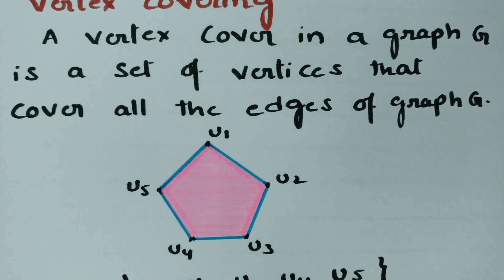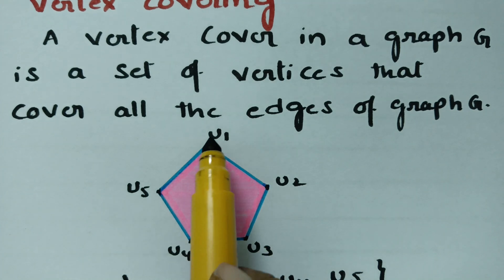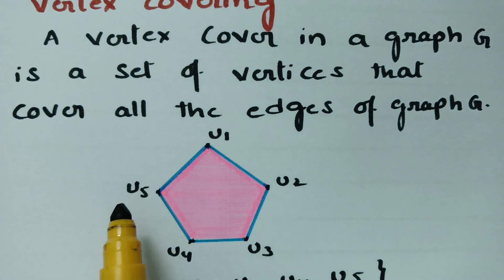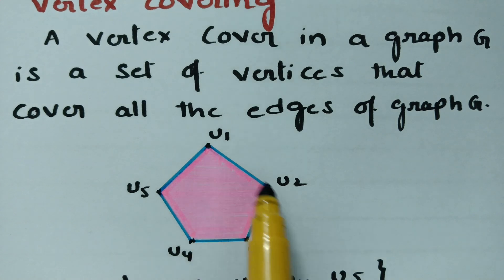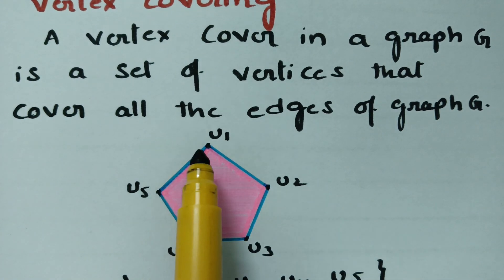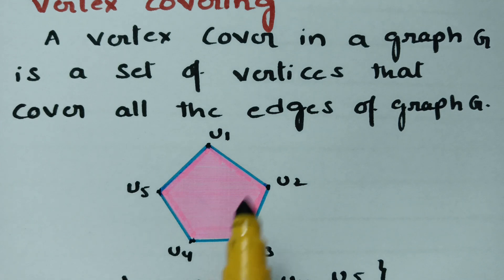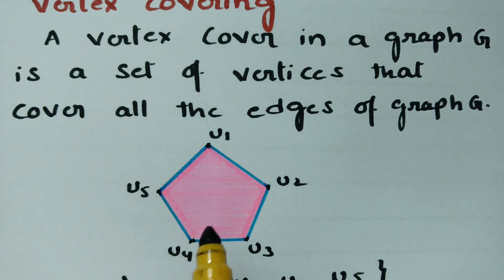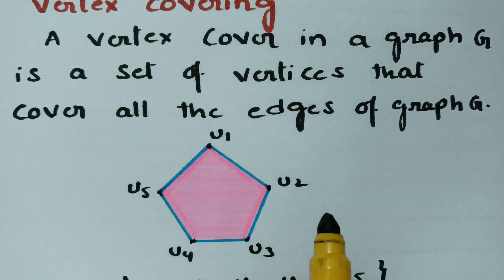Consider graph G with vertices U1, U2, U3, U4, U5 and 5 edges. If we select some vertices from this main vertex set and all the edges of the graph are covered, then we say that it is a vertex cover.